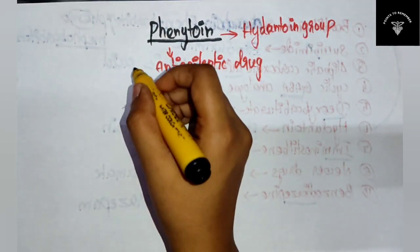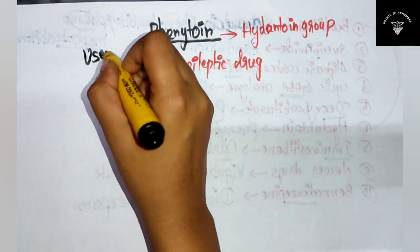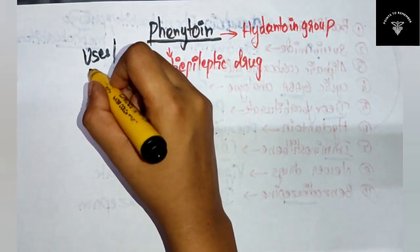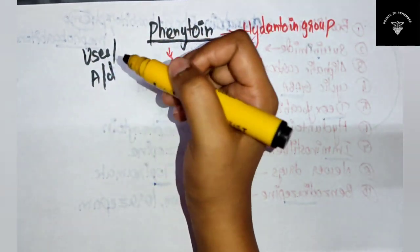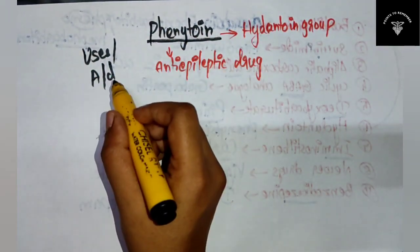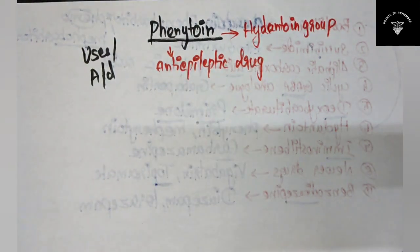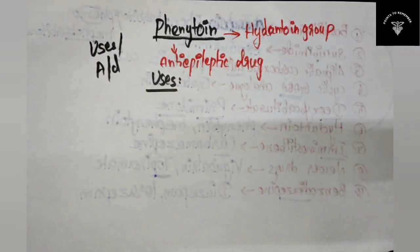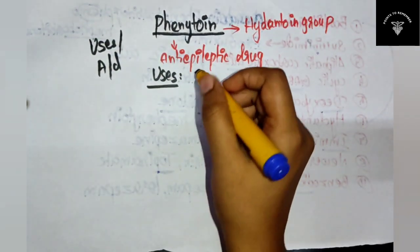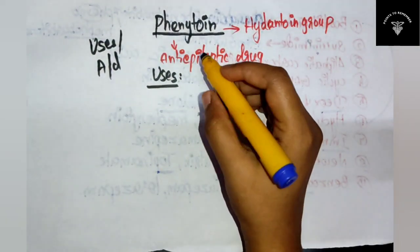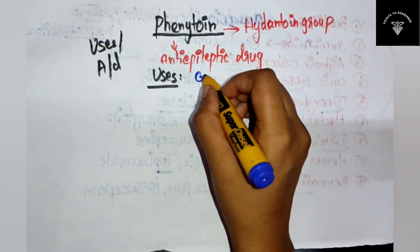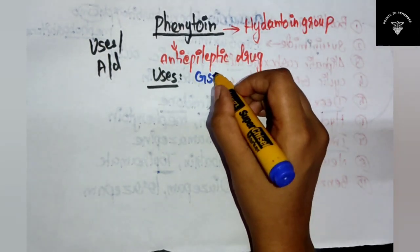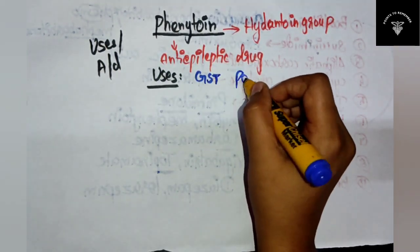Now let's see the uses and the adverse effects of phenytoin. For uses, remember the mnemonic GST partial. G is for generalized tonic-clonic seizure.